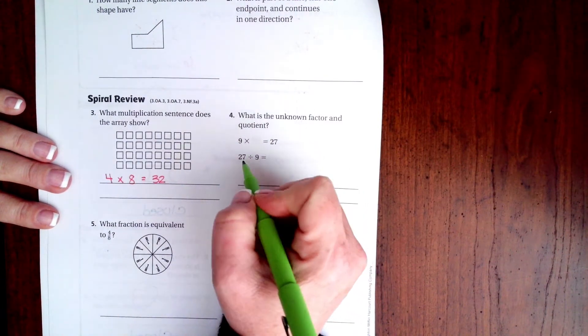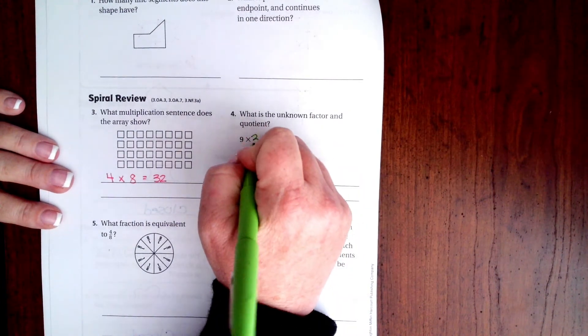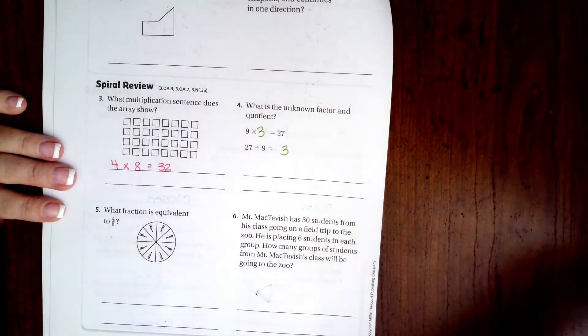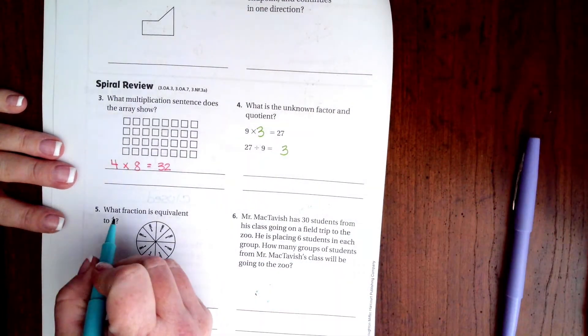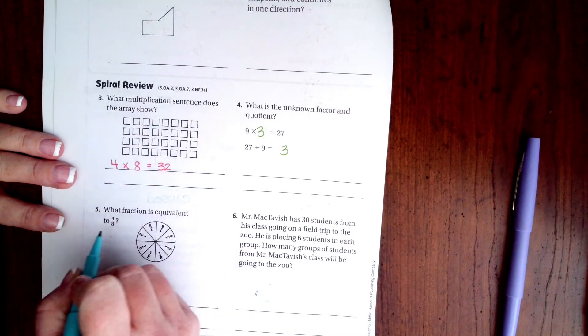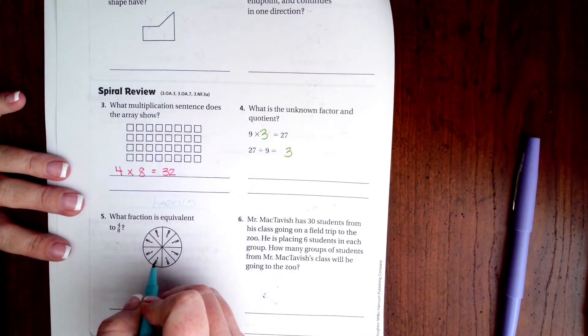All right, so now we're going down here and it says what fraction is equivalent to four-eighths. So each one of these are one-eighth. So I'm gonna go, there's one-eighth, two-eighths, three-eighths, four-eighths right there.